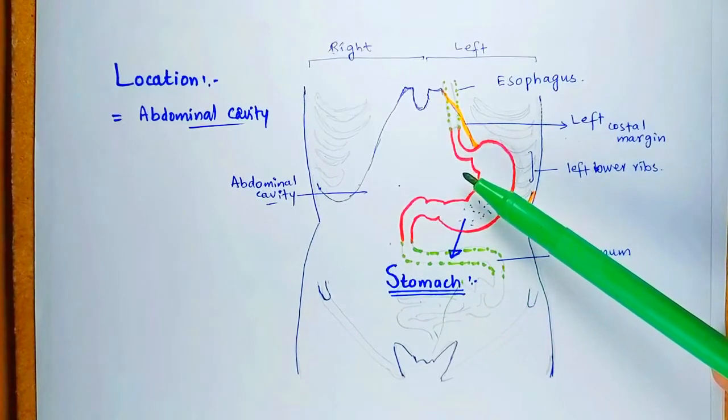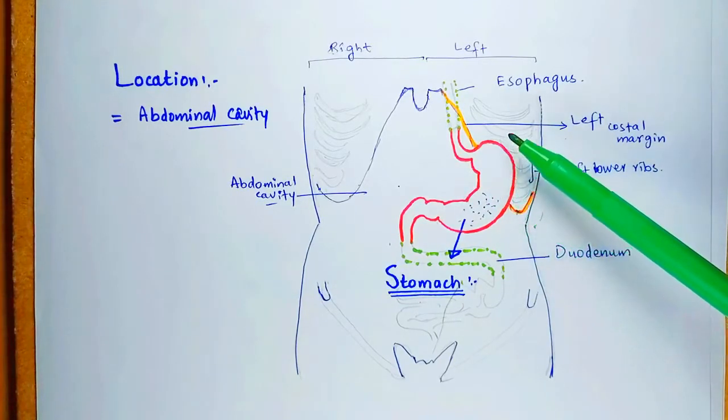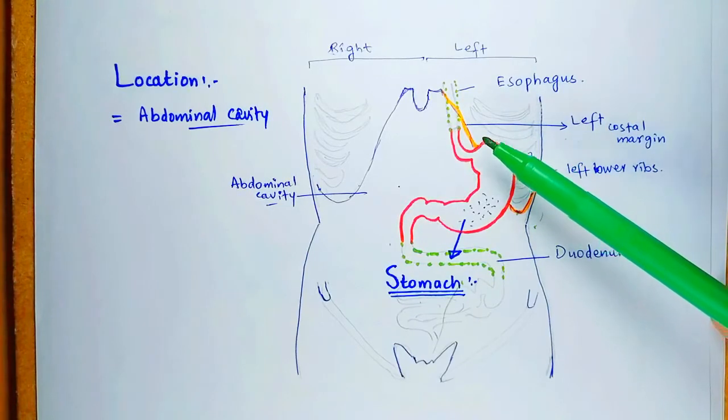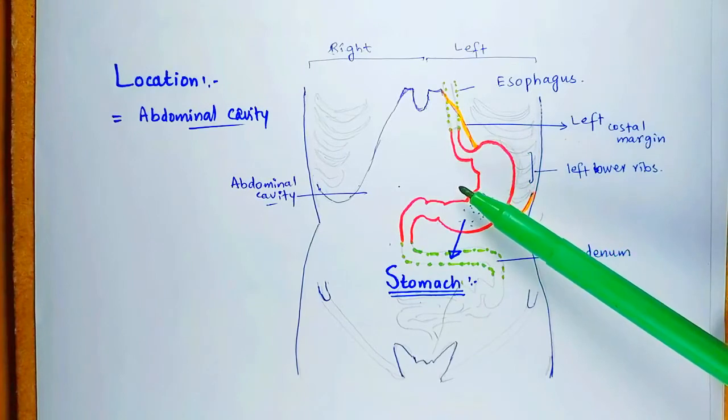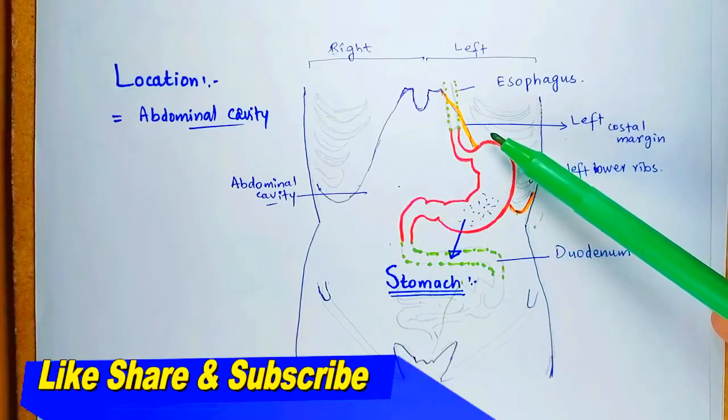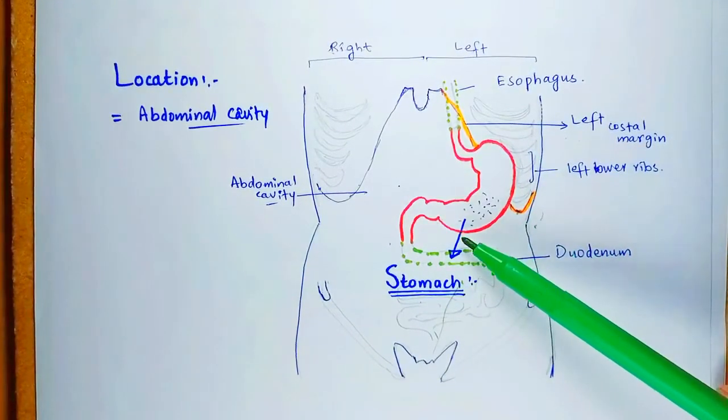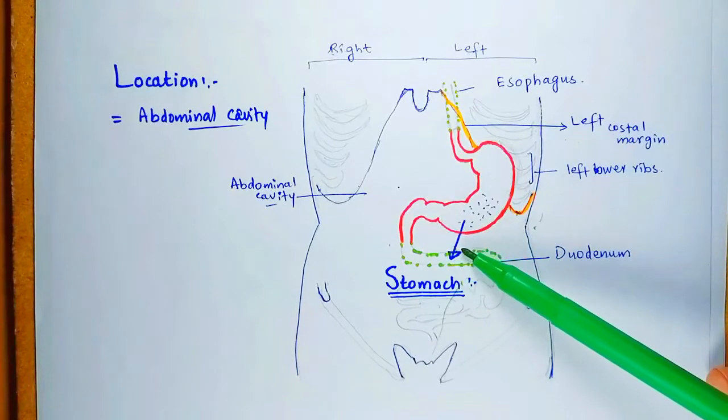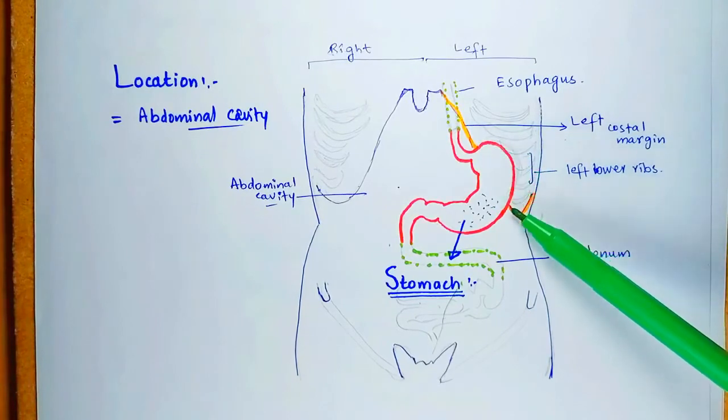The anatomical location of the stomach: the stomach is situated obliquely in the upper and left part of the abdominal cavity. It extends from beneath the left costal margin region into the epigastric and umbilical regions. Most of it lies under the cover of the left costal margin and the lower ribs. Here you can see the diagrammatical representation of the anatomical location of the stomach in the abdominal cavity.